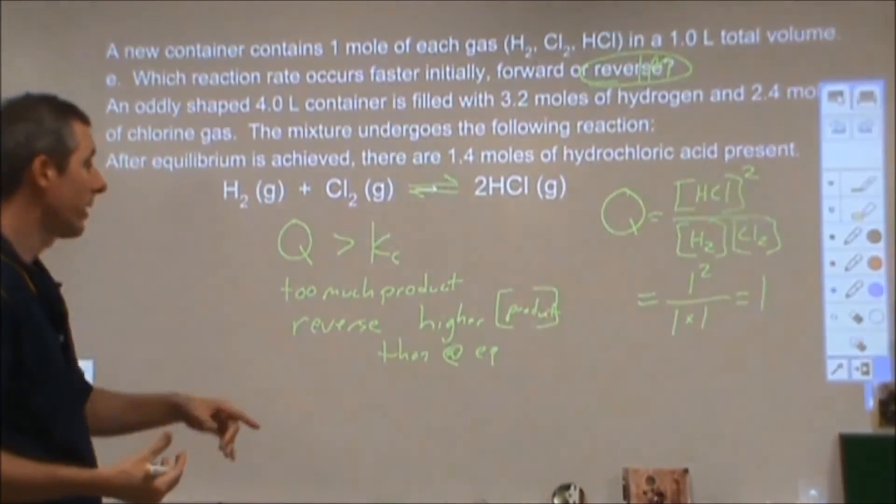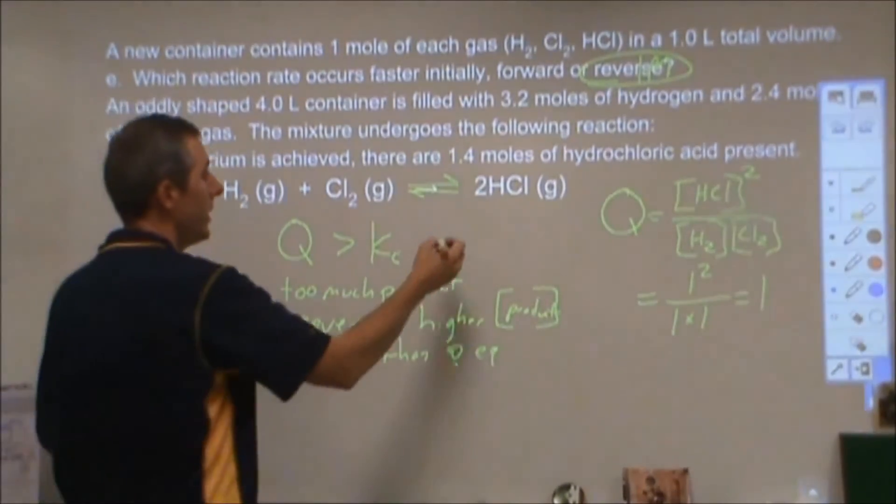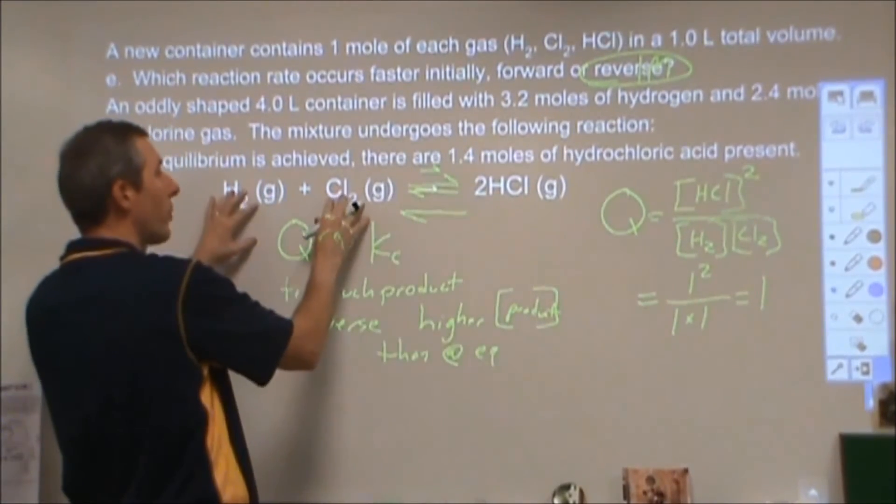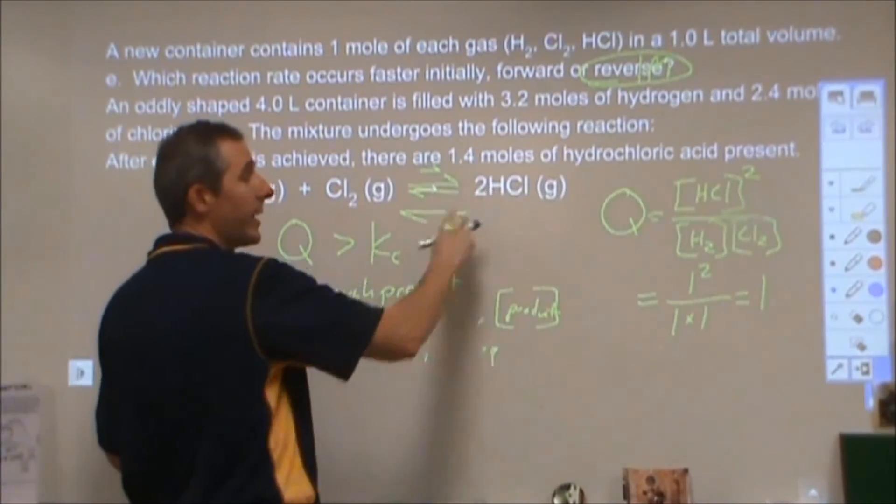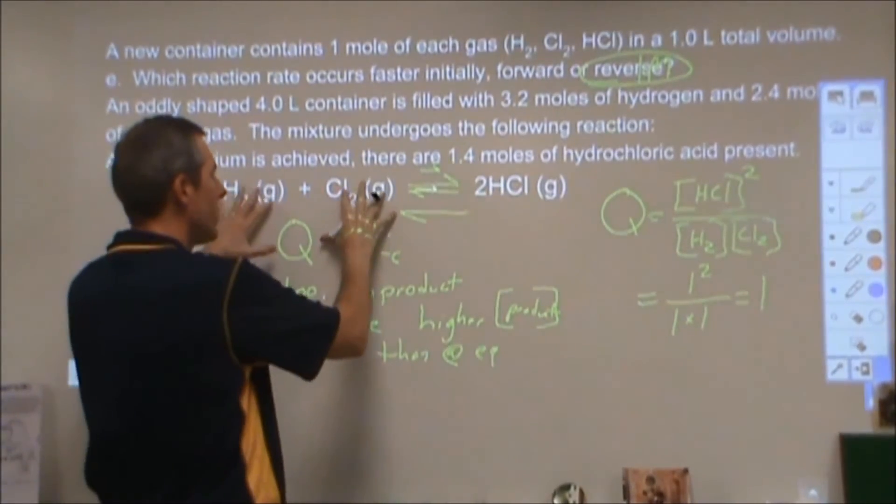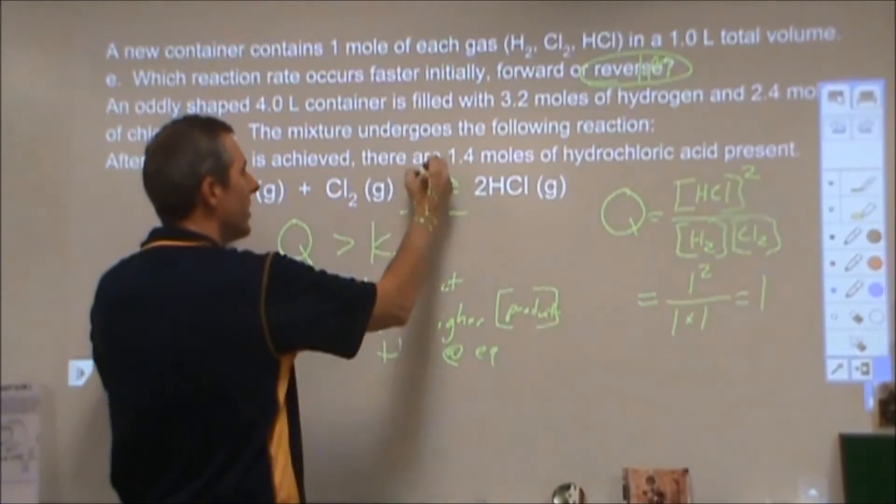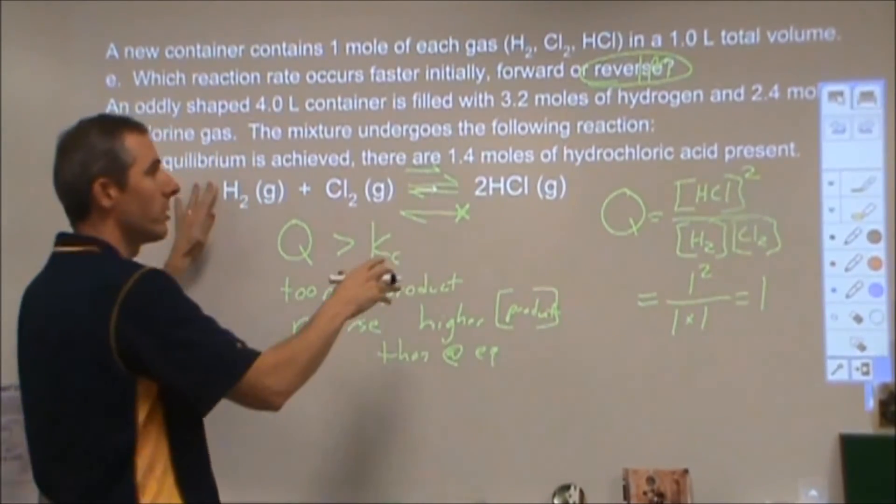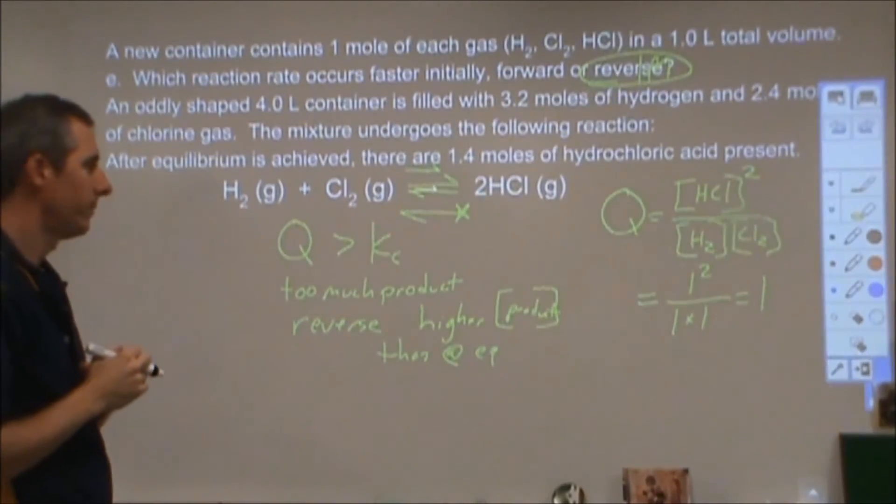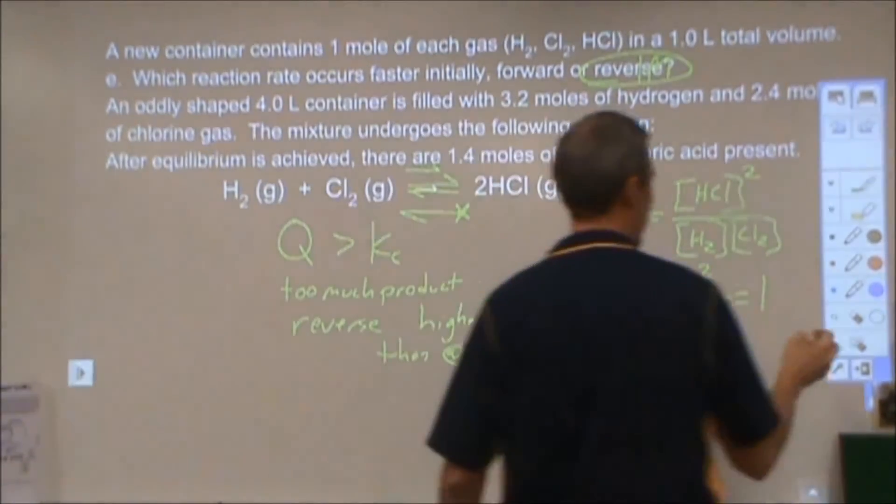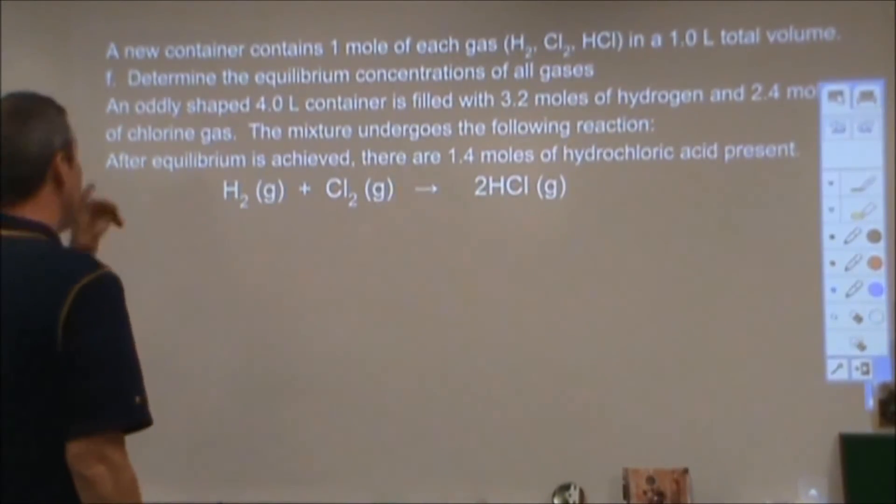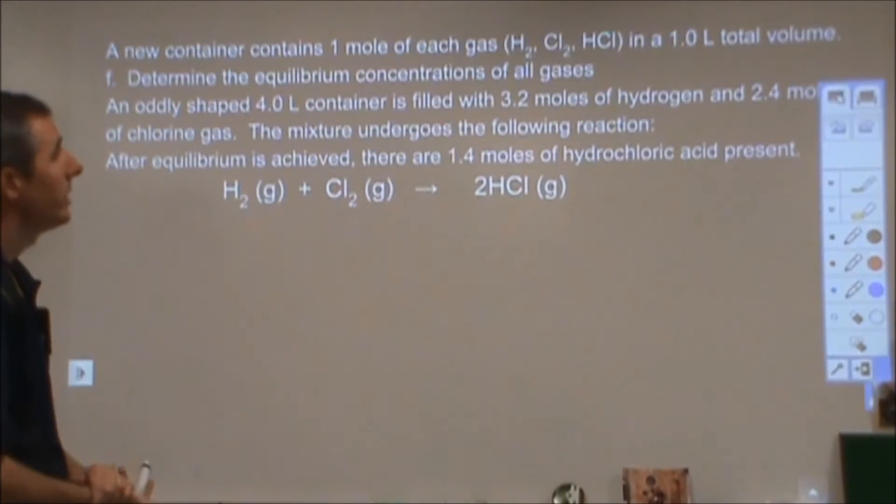Now that will naturally work itself out because if the reverse rate is faster than the forward rate, what's going to happen is I'm going to make more reactants and make not as much product. So this is gradually going to increase in concentration, which is going to make this speed up. And this is going to be losing concentration. This is going to start to slow down until those two rates become equal. So then in part F it says determine the equilibrium concentrations of all gases.